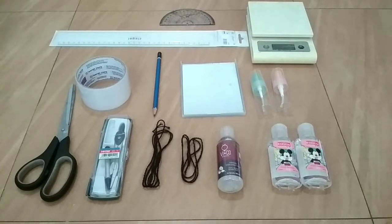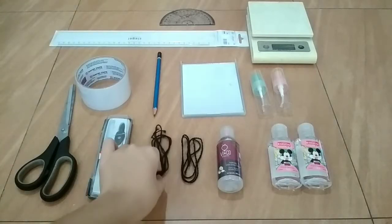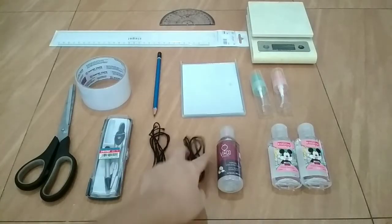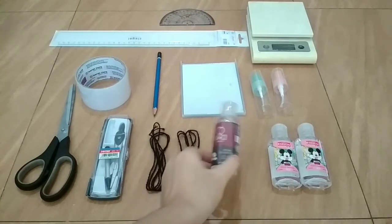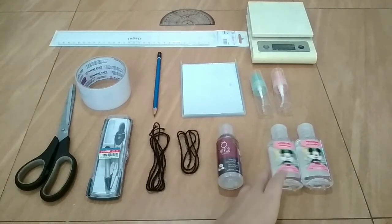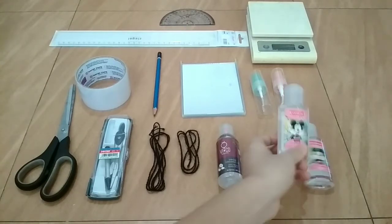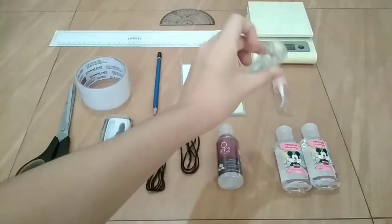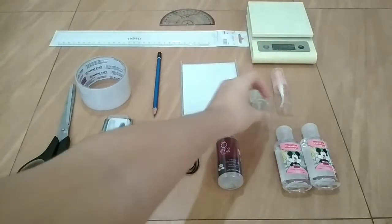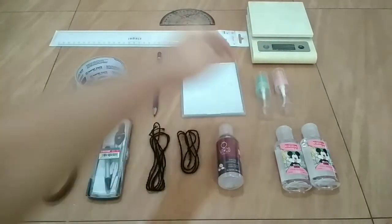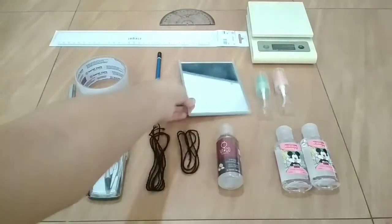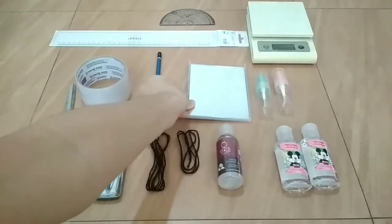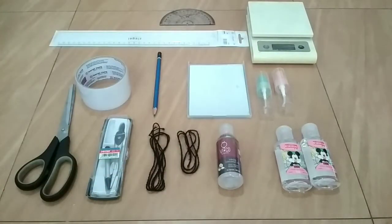So first of all, for the materials that we need, we will need strings. I cut out one meter and also 80 centimeters of these strings, and an unknown mass of an object. I will be using this as our mass, and for the known masses, I'll be using these identical hand sanitizers. For the pulleys, I'll be using these identical bottles since they have a circular shape at its bottom, and a mirror to mark the position later on. Also, a scale or a balance to measure the mass of these known masses.